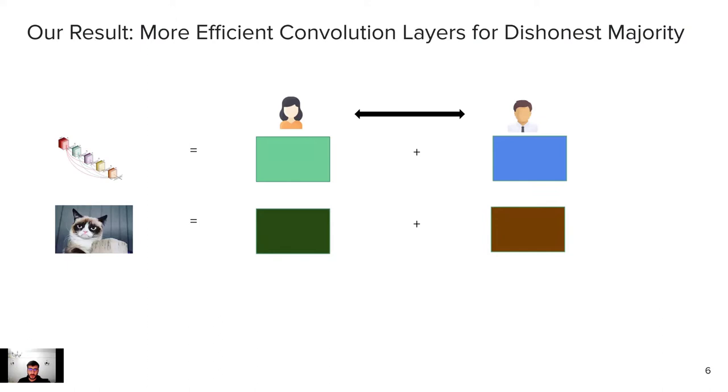Our result is we can obtain more efficient convolutional layers for dishonest majority. In this talk, we're going to talk always about additive secret sharing. What does that mean? This model is additively secret shared between Alice and Bob, such that each individual share reveals nothing about the final model, but if they combine the two shares, they can reconstruct the output. The same goes with a grumpy cat. They can only see that if they put their shares together, and then they can reconstruct the grumpy cat.